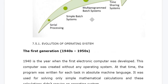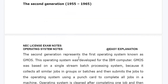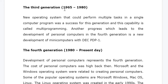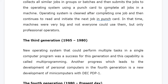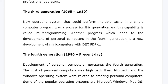Next came the third generation, which was the multi-program batch system. The third generation was between 1965 to 1980. New operating systems that could perform multiple tasks in a single computer program were successful in this generation. In the second generation, only one task was done at a time, but here multiple tasks could be performed. This was the key success of this generation, and the concept of multi-programming — performing multiple programs and multiple tasks at a single time — came from here.